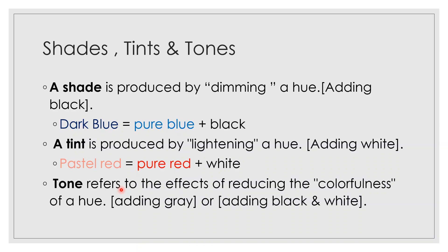There are three characteristics of color. One is shade, which is produced by dimming a hue — for example, dark blue equals pure blue plus black. Next is tint, which is produced by lightening a hue with white. For example, pastel red equals pure red plus white, meaning pure red is lightened to produce pastel red.